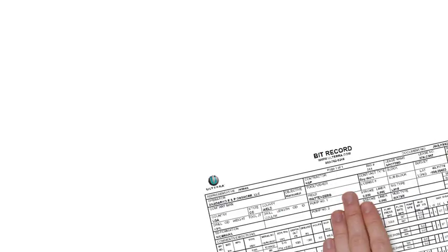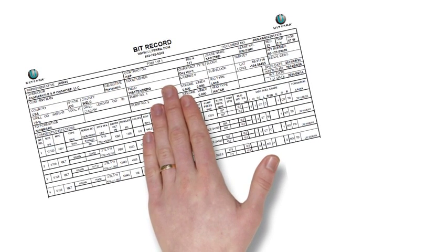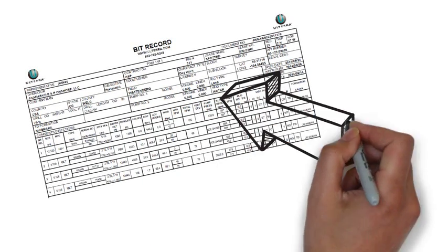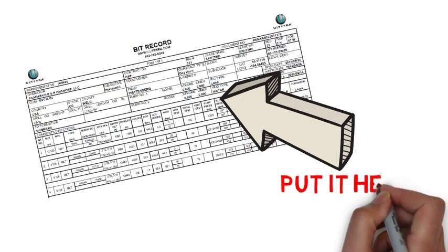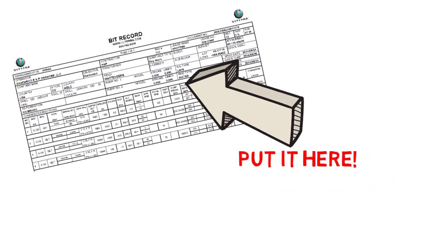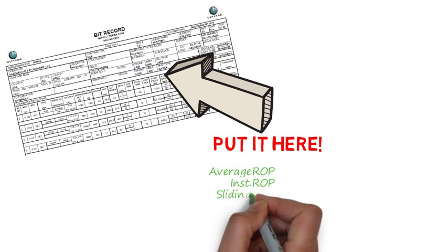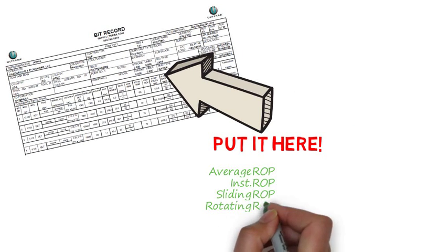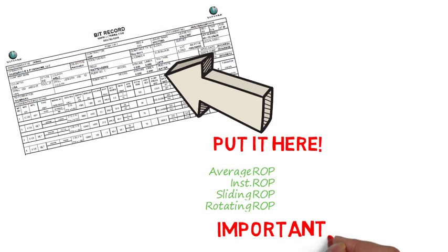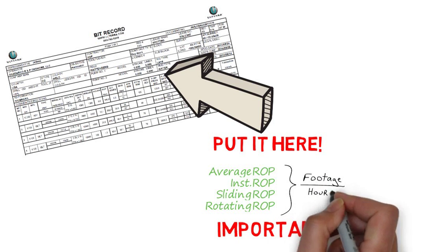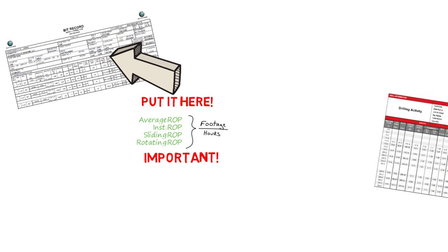Because ROP is used to try to understand the limits of the bit and drilling operation, it is important to record it accurately and specifically. Average, instantaneous, sliding, and rotating ROPs are all important. In many cases, recording the sliding and rotating footage in hours is the best way to document the ROPs.